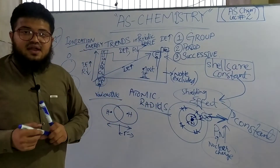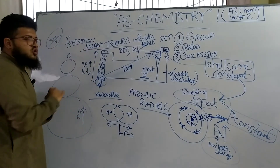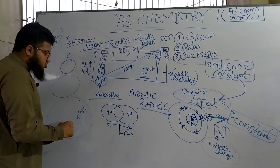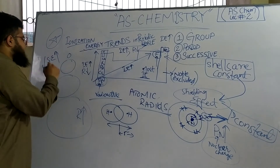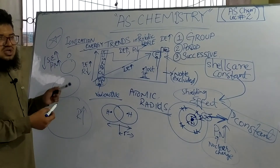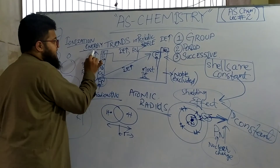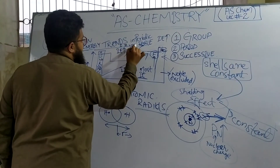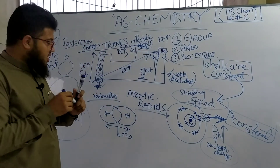Regarding the shielding effect going down the group: as you go down the group, the shielding effect increases, but so does the proton number, so they tend to balance each other out. There is no significant net effect of shielding in the vertical group. However, across the period, shielding is significant because it stays constant while nuclear charge increases, causing the radius to decrease.